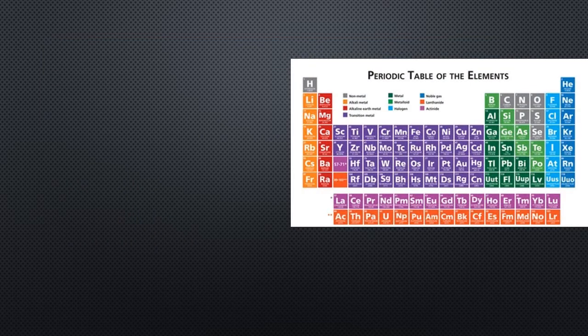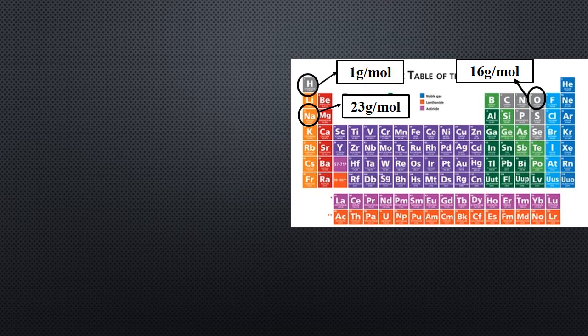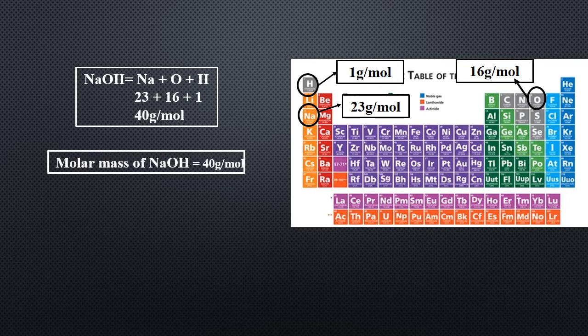Let's calculate the molar mass. Using the periodic table, we find the molecular weight of sodium hydroxide (NaOH): sodium (Na) = 23 g/mol, oxygen (O) = 16 g/mol, hydrogen (H) = 1 g/mol. Therefore, the molar mass of sodium hydroxide = 40 g/mol.